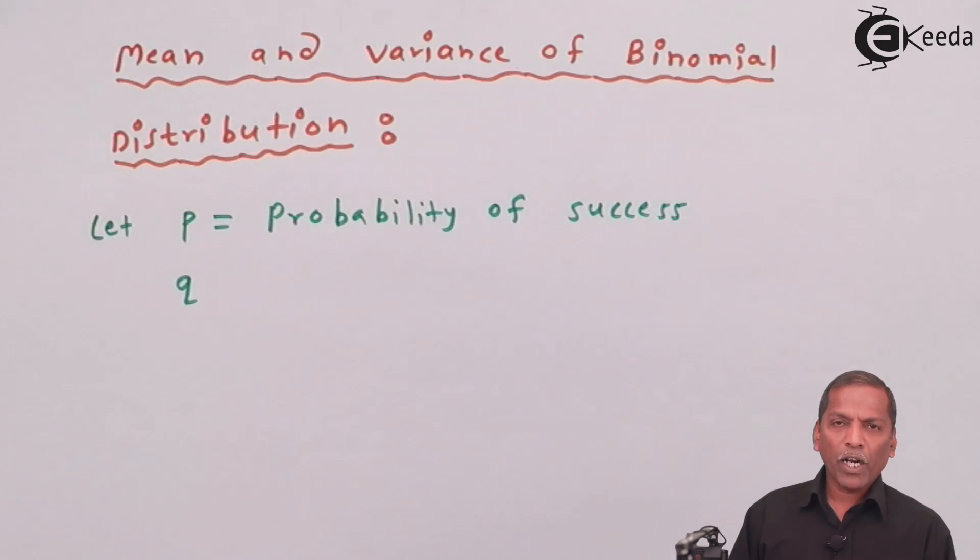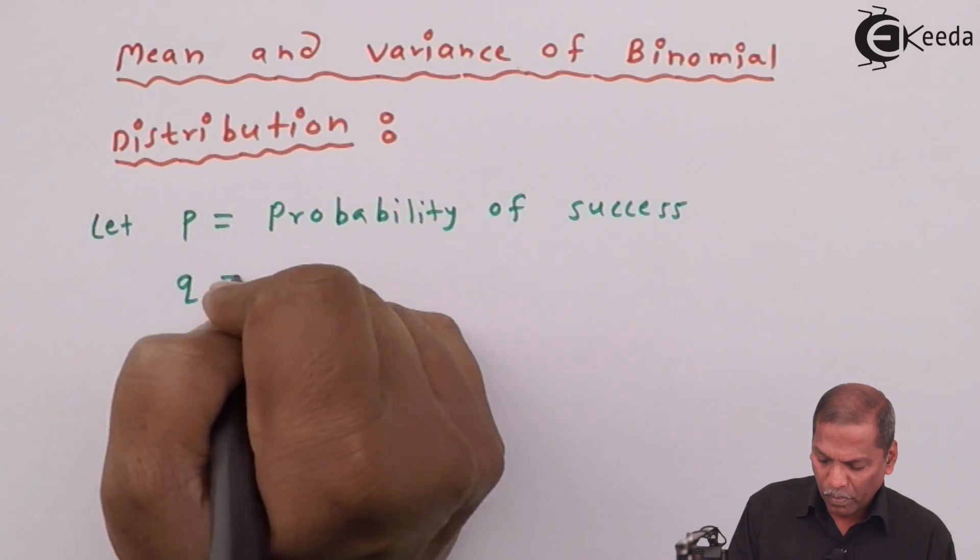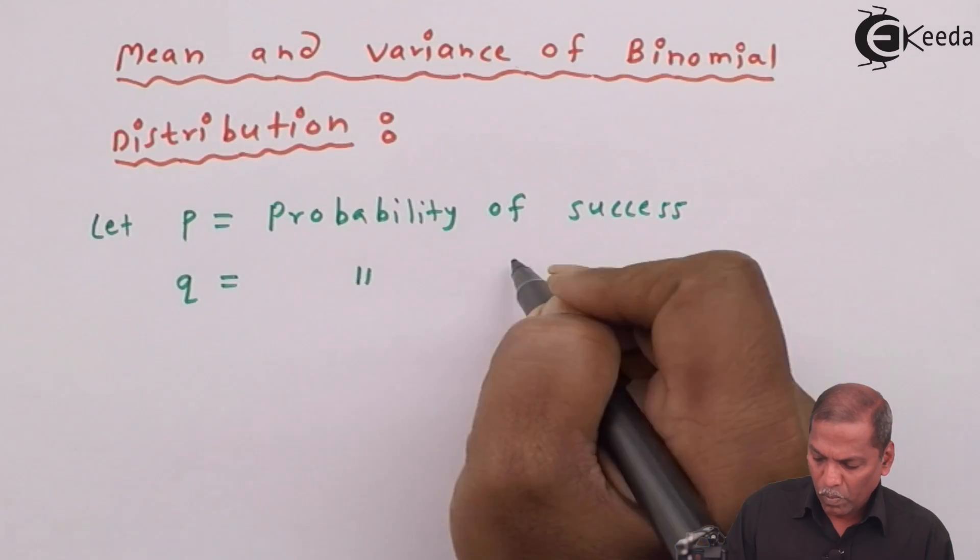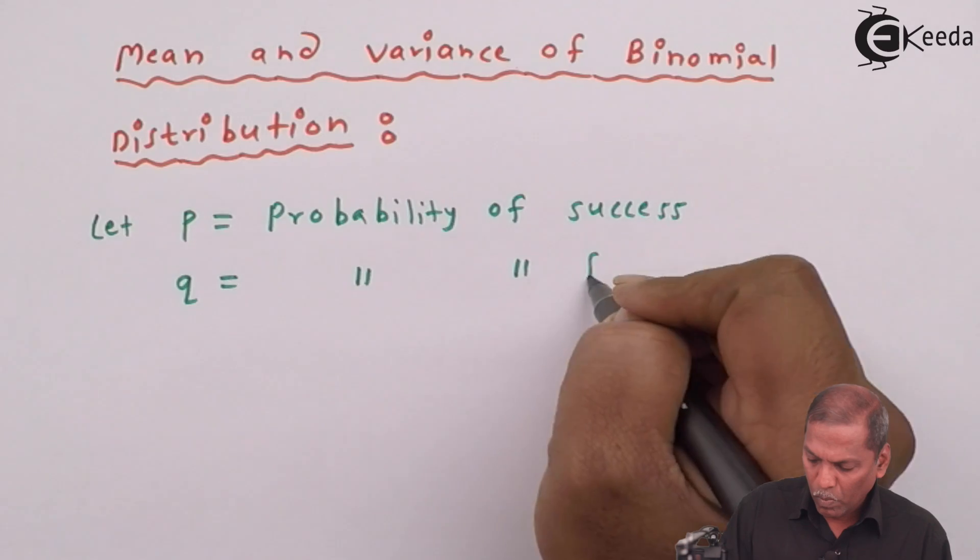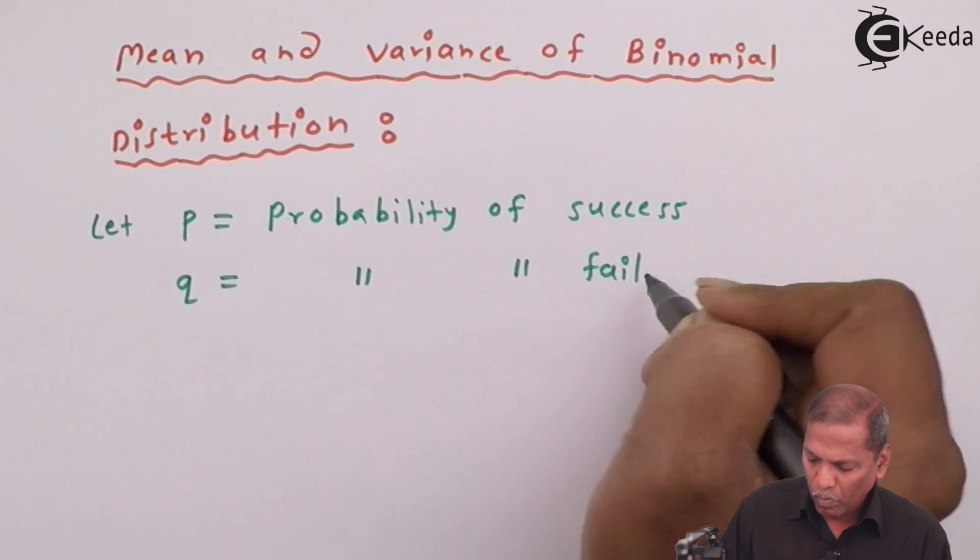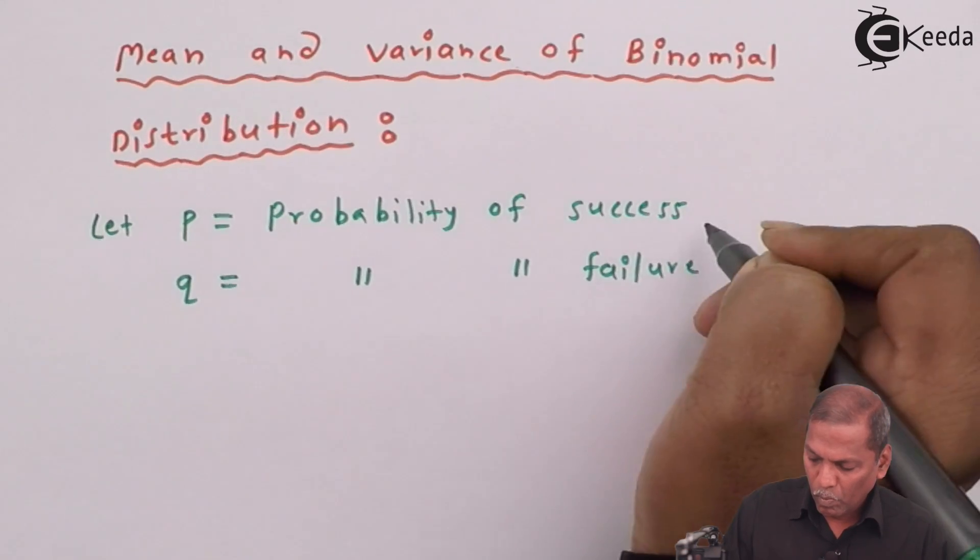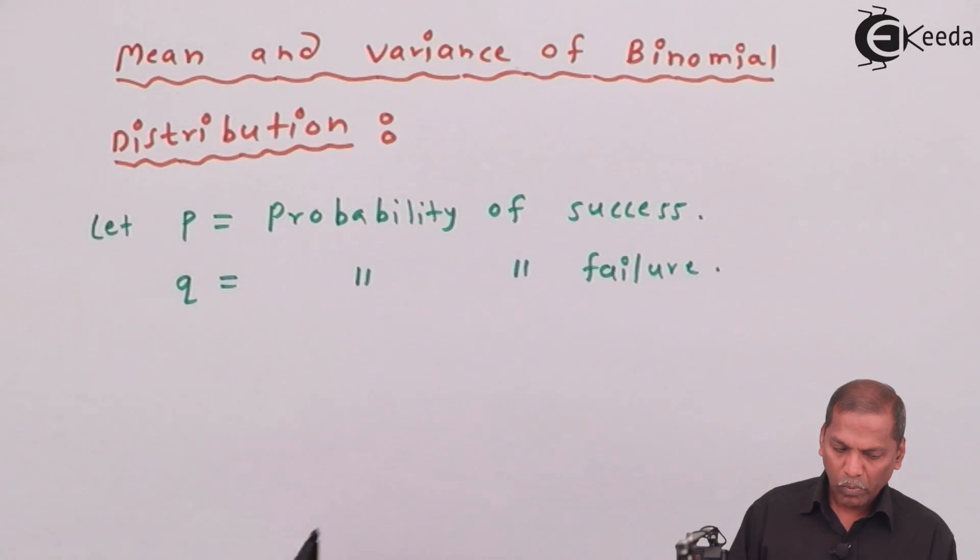Q equals the probability of failure. Therefore, X follows binomial distribution with parameters n and P.